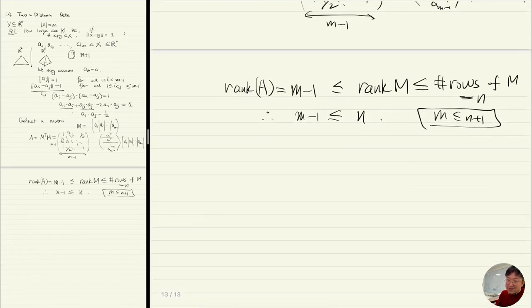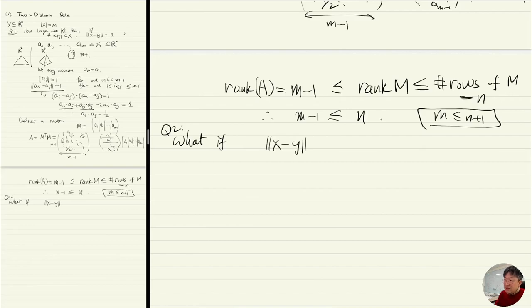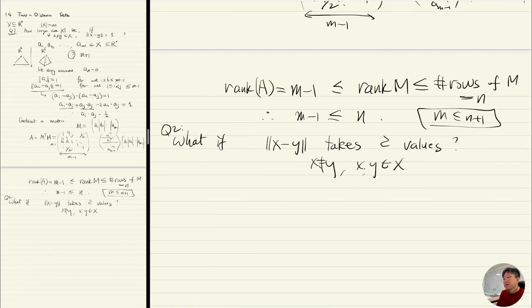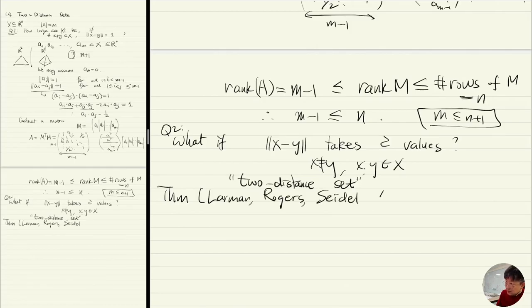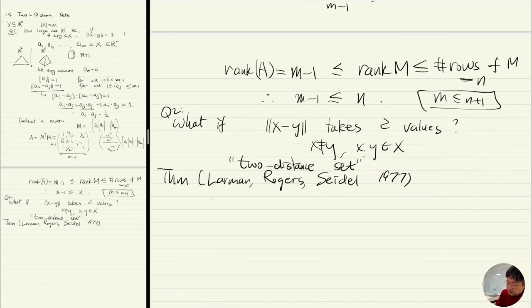Now as the title of this section suggests, we will talk about the extension of this result. What if the distance between distinct elements takes two values? Such a set is called a two-distance set. Here is a theorem due to Larman, Rogers, and Seidel in 1977.